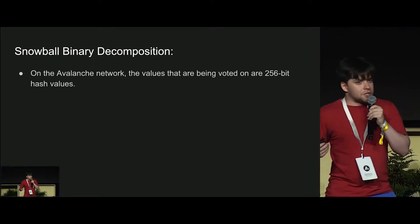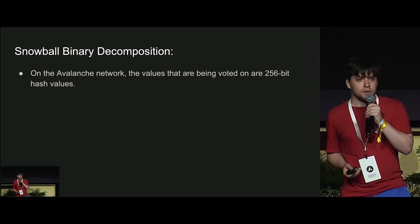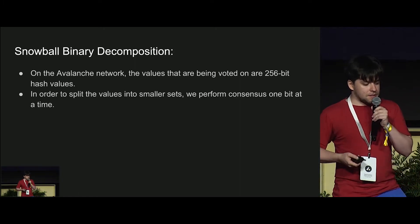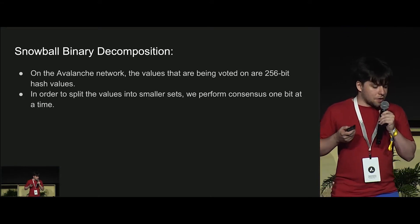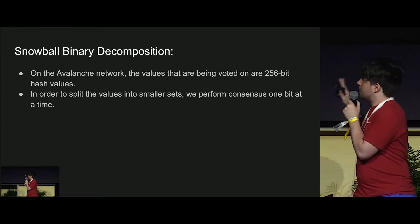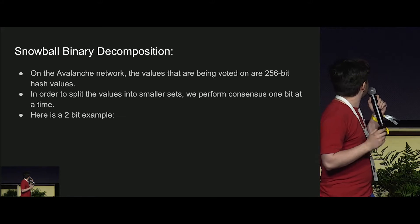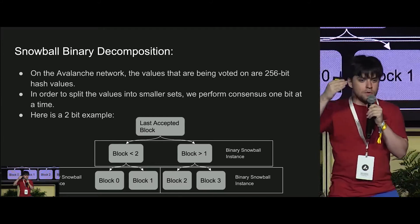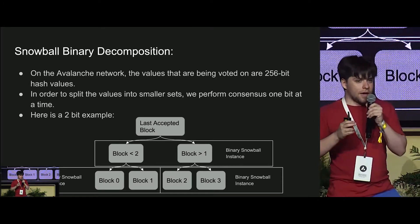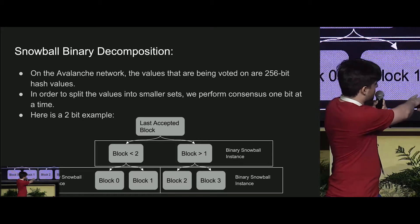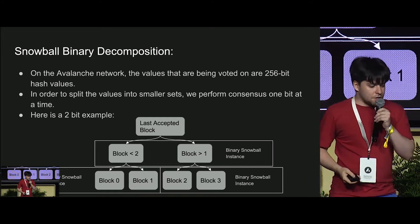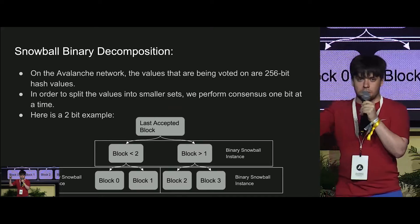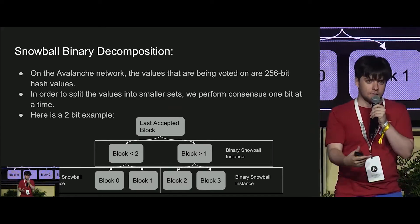In the actual Avalanche network, blocks are voted on by hash. We use cryptographic hash functions — SHA-256, so it's 256 bits. We perform consensus bit by bit as we move through. I tried to do a 256-bit example but it didn't work on the slide, so I'll just do a two-bit example. We essentially have the last accepted block and we're trying to move forward. If the first bit of the block hash in this two-bit example is a one, that means it's going to be either block two or block three — on the right side. If it's a zero, it's going to be either block zero or block one. So you can have three binary Snowball instances: the first one deciding the first bit, and after you decide that, you decide the second bit as either zero or one.